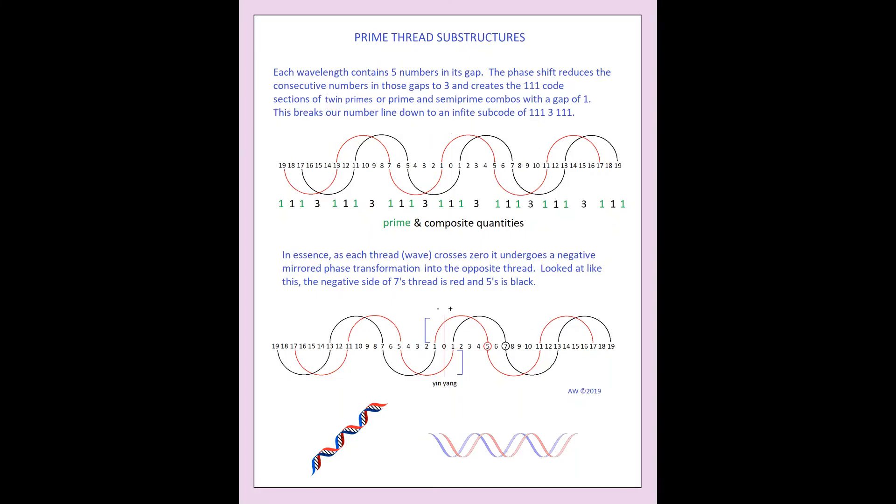This last image highlights the substructures of these geometries. You can see between each wavelength there are 5 numbers. The phase shift reduces the consecutive composites in those gaps to 3, and simultaneously creates the 111 twin prime code sections we touched on earlier. Those could also be prime semi-prime code sections. This creates an infinite prime or semi-prime and composite subcode within our number line of 111, 3, 111, 3, 111, and so on.